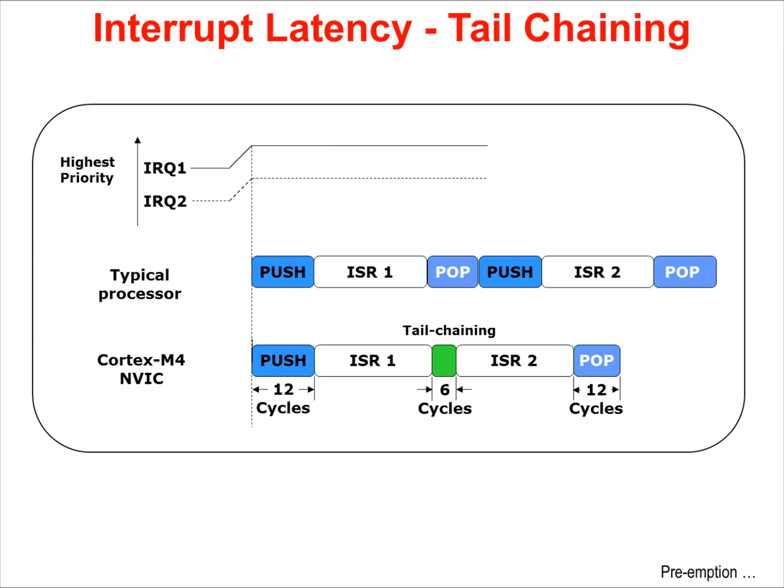Cortex-M4 interrupt handling is done in hardware. We have a very short push at the beginning, then ISR1 runs. The NVIC detects that another interrupt is pending and simply transfers execution to the pending interrupt's ISR. This process takes six cycles. When the second ISR completes and no other interrupts are pending, the state of the processor is restored. This results in a significant decrease in interrupt latency in the typical interrupt-driven system.